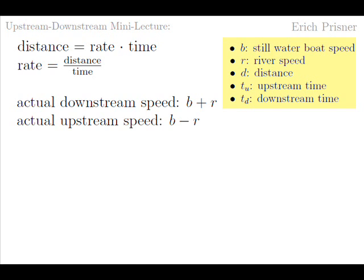If the river speed equals the boat speed in still water, if b equals r, then upstream the boat moves at an actual speed b minus r equals zero. In other words stand still. So the actual speeds are b minus r respectively b plus r. The distance is d in both cases. And the time it takes are tu respectively td.